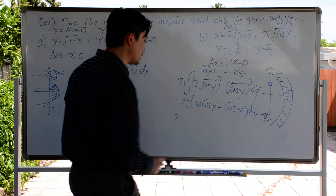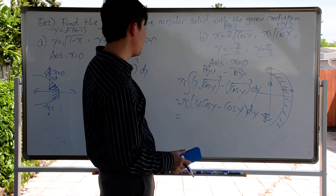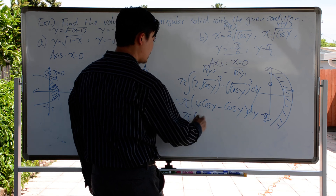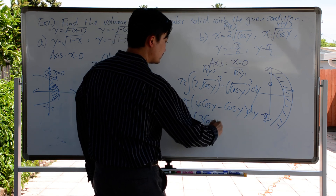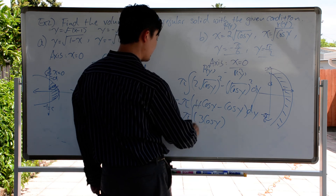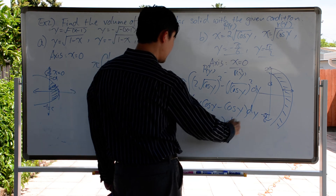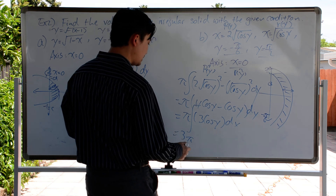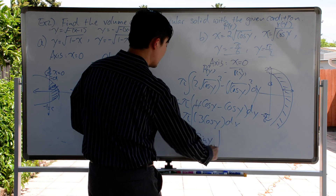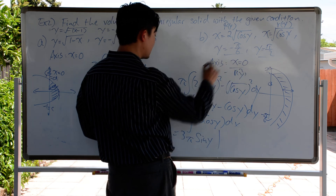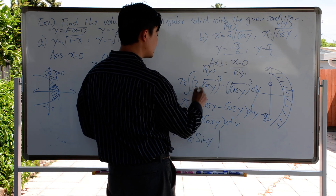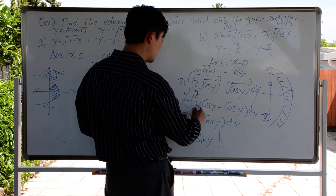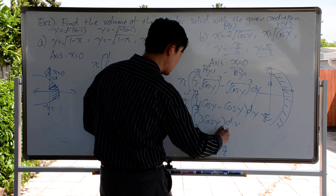We can combine like terms to get 3 cosine y. We can pull out the coefficient 3 and integrate: the integral of cosine y is sine y. The bounds go from negative pi over 6 to pi over 2.